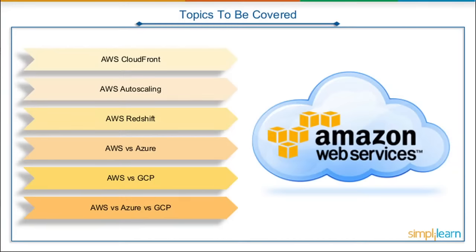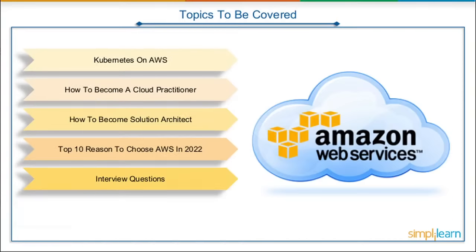After which, we will have a look at the comparison between AWS and other cloud platforms like Azure and GCP, to understand the individual identities and how they differ from each other based on various parameters. We will also see how Kubernetes are implemented on AWS. After that, we will focus on how we can adopt AWS in our career and pave our path towards becoming AWS Cloud Practitioner or AWS Solution Architect.